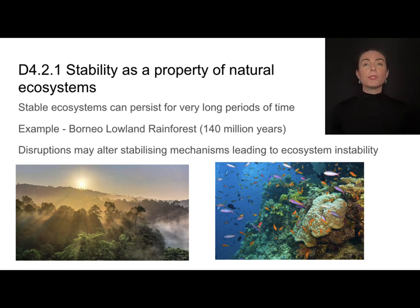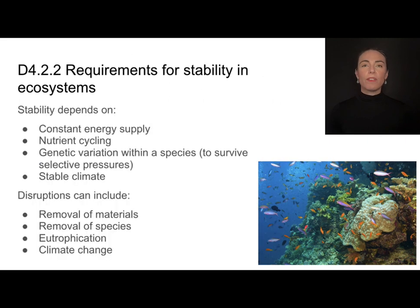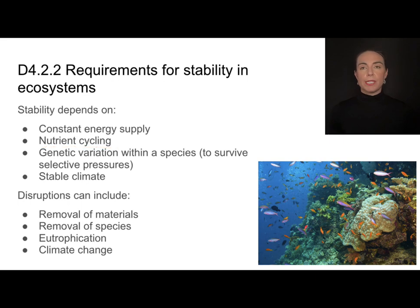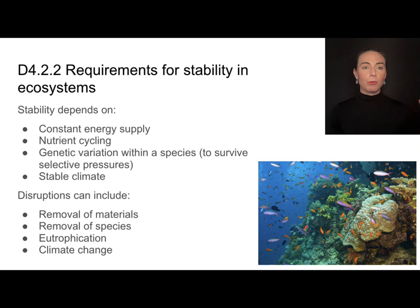Disruptions may alter some of those stabilizing ecosystems, which can lead to those ecosystems being unstable. In order for an ecosystem to remain stable, it needs a constant energy supply, maybe from the sun. It needs nutrient cycling — we think about the carbon cycle, nitrogen cycle, phosphorus cycle — and all of those depend on things cycling through different organisms and abiotic processes.